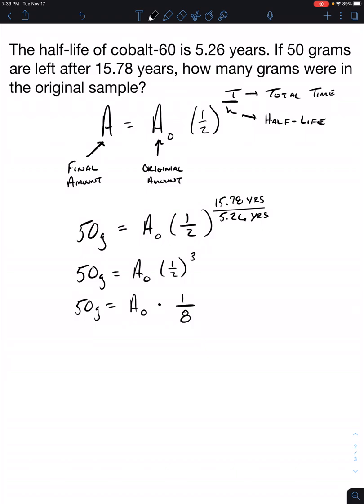At this point, we need to isolate a sub 0. So we're going to multiply by 8 to both sides to cancel that out. We're going to multiply the left side by 8. So that tells us that our final answer is going to be 400 grams is equal to a sub 0.